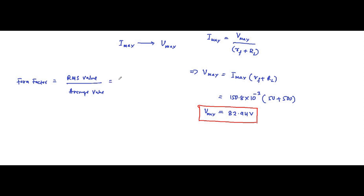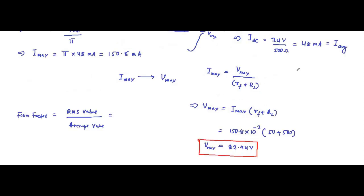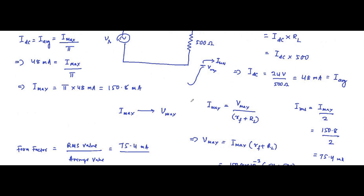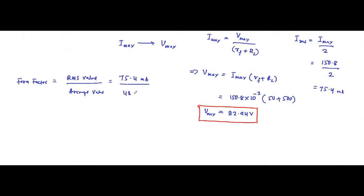We will take current for this calculation. The RMS value for a half wave rectifier circuit is equal to Imax divided by 2. So Imax of 150.8 milliampere divided by 2 gives an RMS value of 75.4 milliampere. The form factor equals 75.4 milliampere divided by the average value of 48 milliampere, which comes out to approximately 1.57.